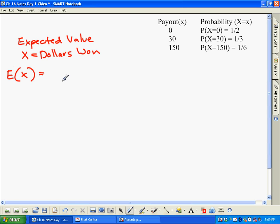And all we do is, it's a very simple calculation. We take each payout, so our first payout is zero dollars, and we multiply it by the chance of it occurring, so it'd be zero times a half. Now the next one is $30, so we say plus $30.